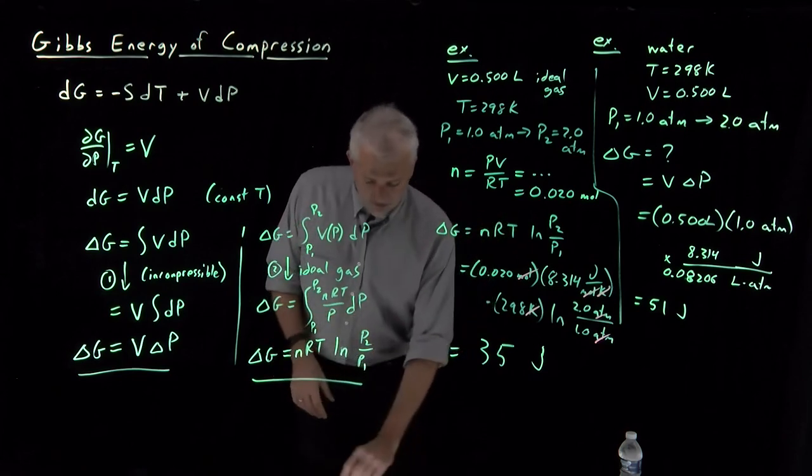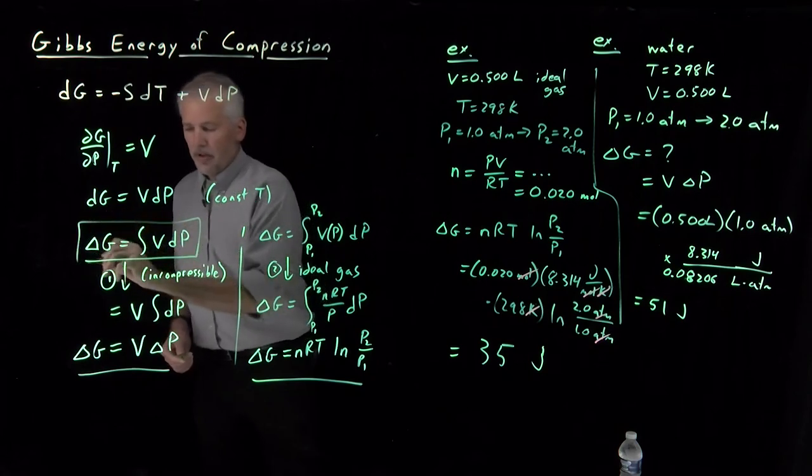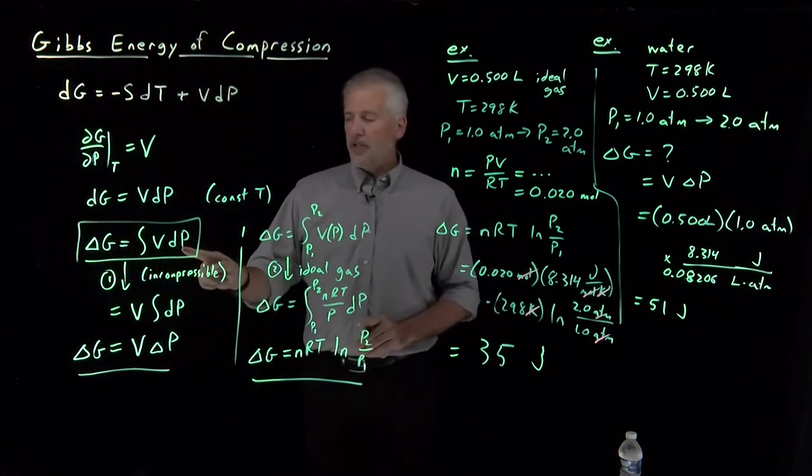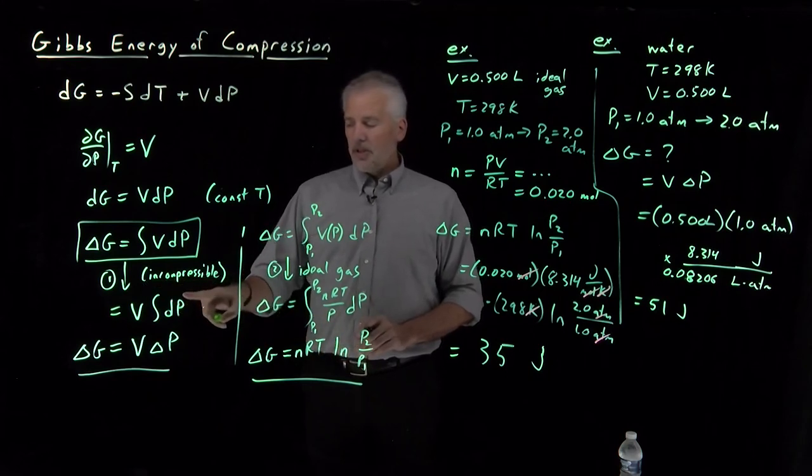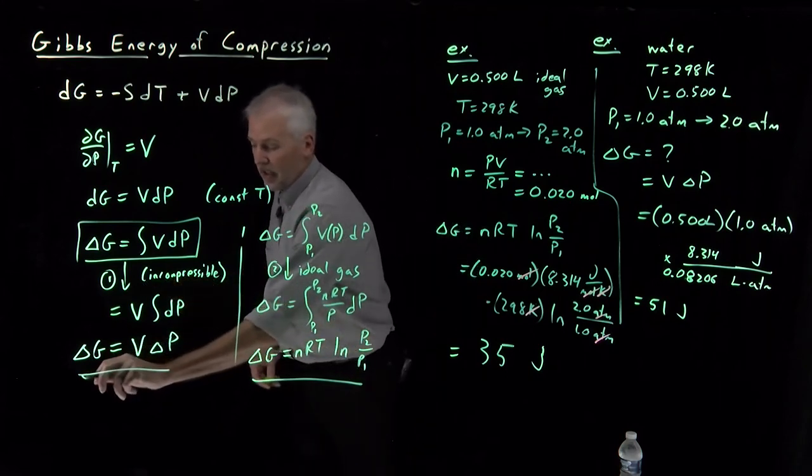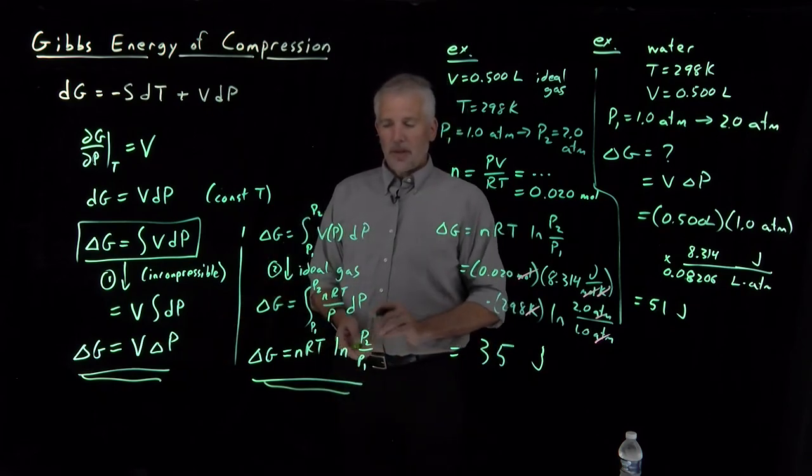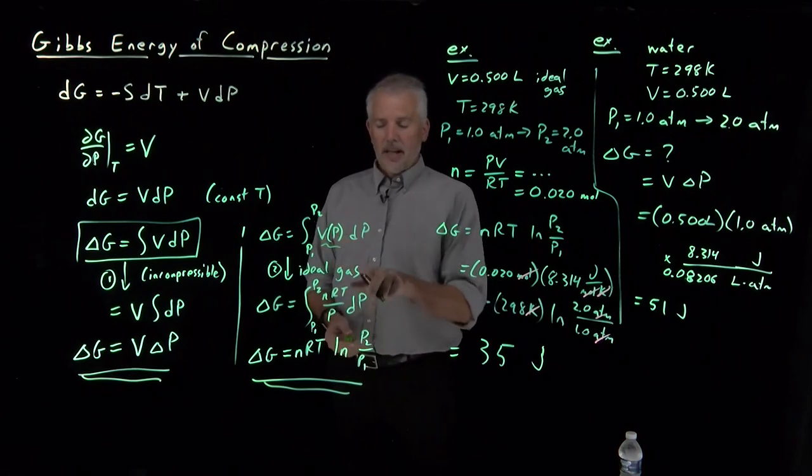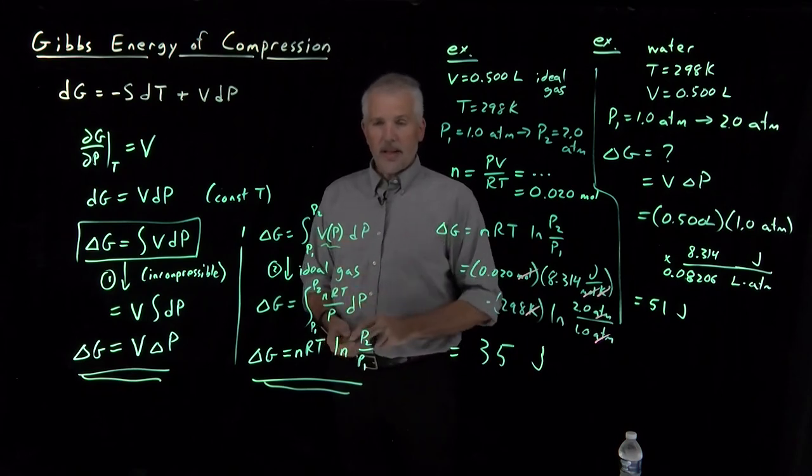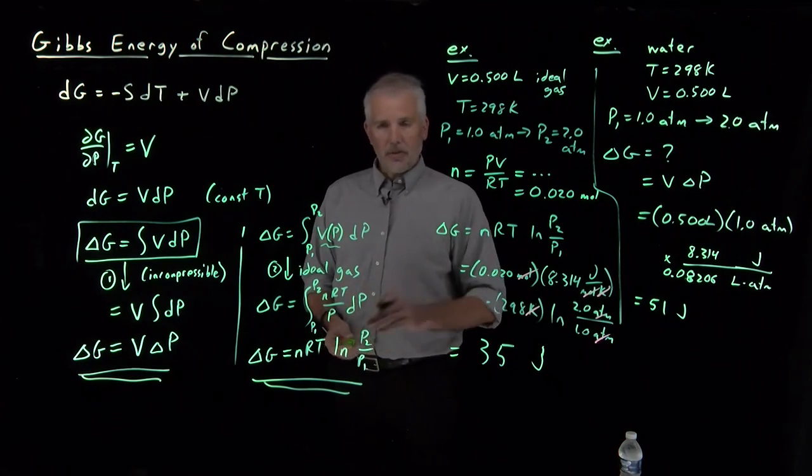So we have three different expressions. This is the most general expression. If we want to know how the free energy changes as we change the pressure, this is always correct. If we make assumptions that the substance is incompressible or an ideal gas, we can arrive at two different results. In other circumstances, if the pressure dependence of the volume had a different form other than the ideal gas behavior, as it will for other substances, we could obtain other expressions still.